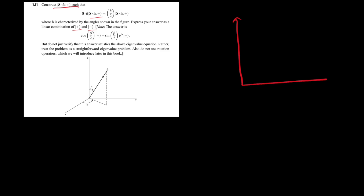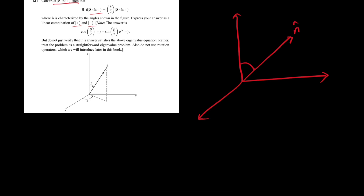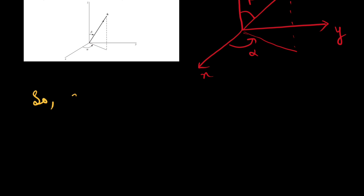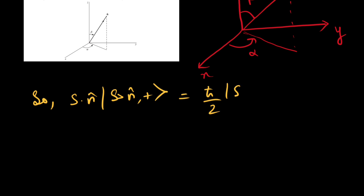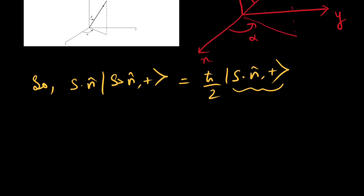They have given us a figure where the n̂ vector makes an angle beta with the z-axis, and the projection of n̂ onto the xy-plane makes an angle alpha with the x-axis. We have been given that s·n̂ acts on |s·n̂,+⟩ to give ℏ/2 times |s·n̂,+⟩, and we have to construct the |s·n̂,+⟩ state.